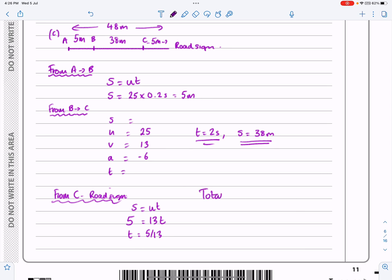So the total time for this one, convoluted journey, would be 0.2 seconds there, it's going to be 2 seconds there, and it's going to be 5 over 13 seconds there. So it's just all of those added together. And then whatever that works out to be. Apparently that works out to be 2.6 seconds.